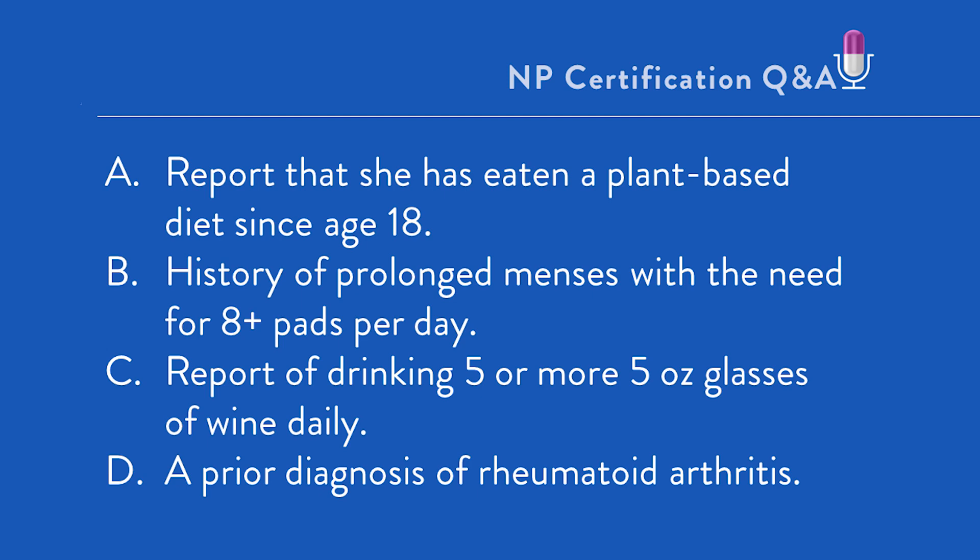A. A report that she has eaten a plant-based diet since age 18 — or in other words, a vegan diet. B. History of prolonged menses with the need for 8-plus pads per day. C. Report of drinking 5 or more 5-ounce glasses of wine daily. D. A prior diagnosis of rheumatoid arthritis.